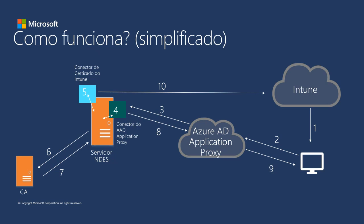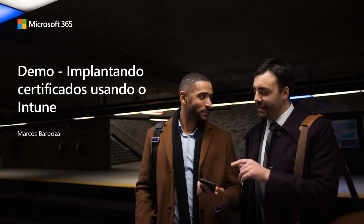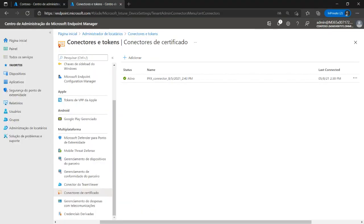Os passos para seguir com essa configuração são: primeiro, instalar o servidor NDES; depois, instalar o conector do Intune para o servidor NDES; configurar o Azure AD Application Proxy; criar um perfil de certificado raiz e também criar um perfil SCEP para fazer a entrega de certificado para o dispositivo. Para demonstrar: no Endpoint Manager, em administração de locatários, conectores e tokens, conectores de certificado — no ambiente já está configurado, mas basta clicar em adicionar, fazer o download do conector de certificado e instalá-lo no servidor NDES.